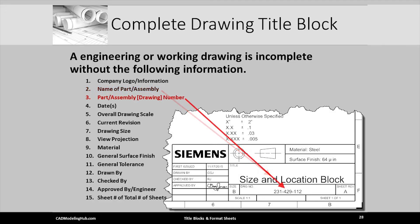By default Siemens automatically enters the model file as the drawing number. I edited this cell and entered the number 231429112.